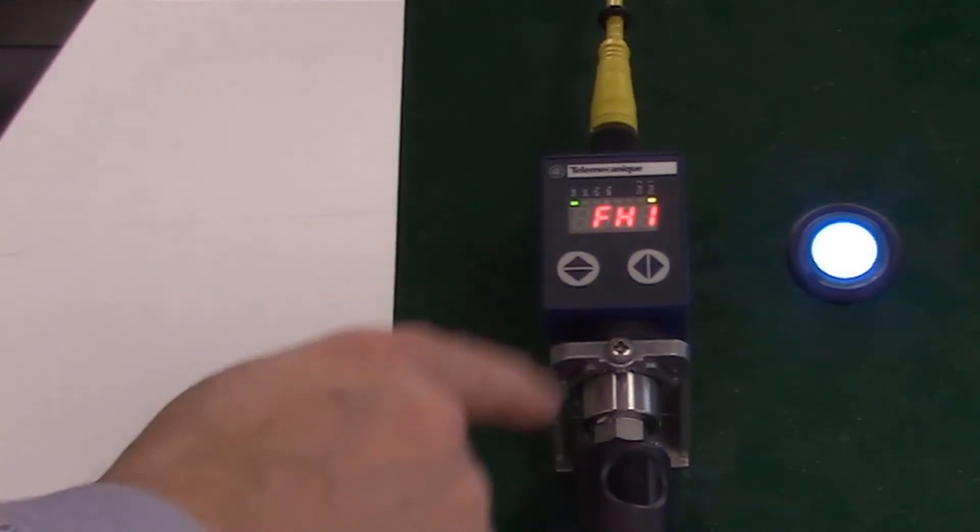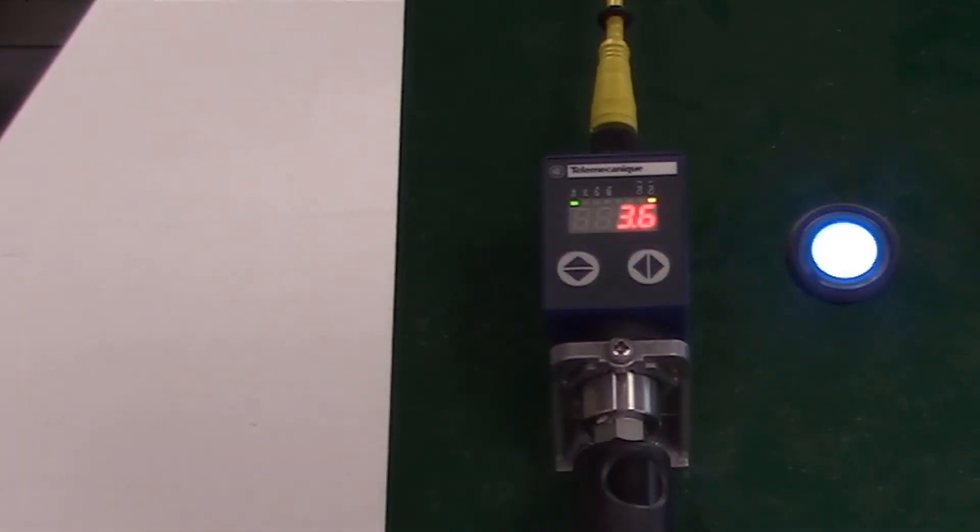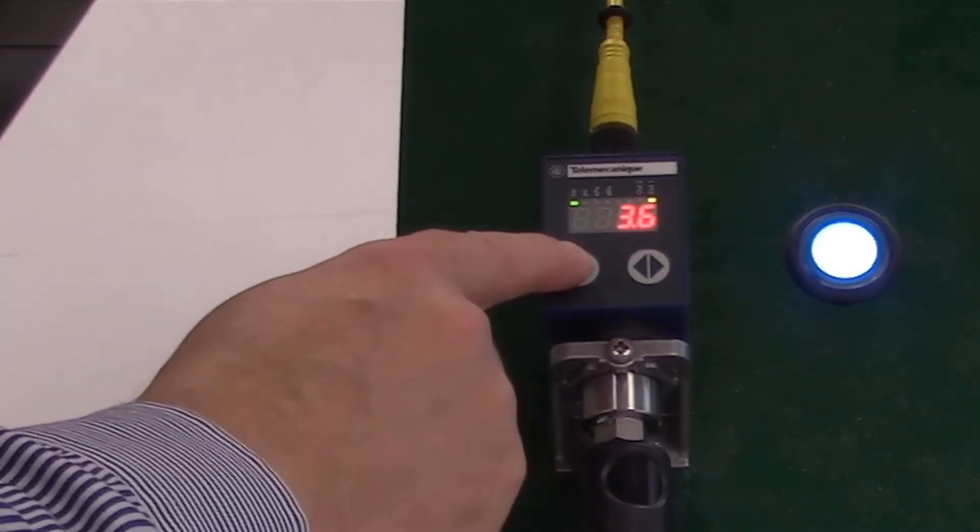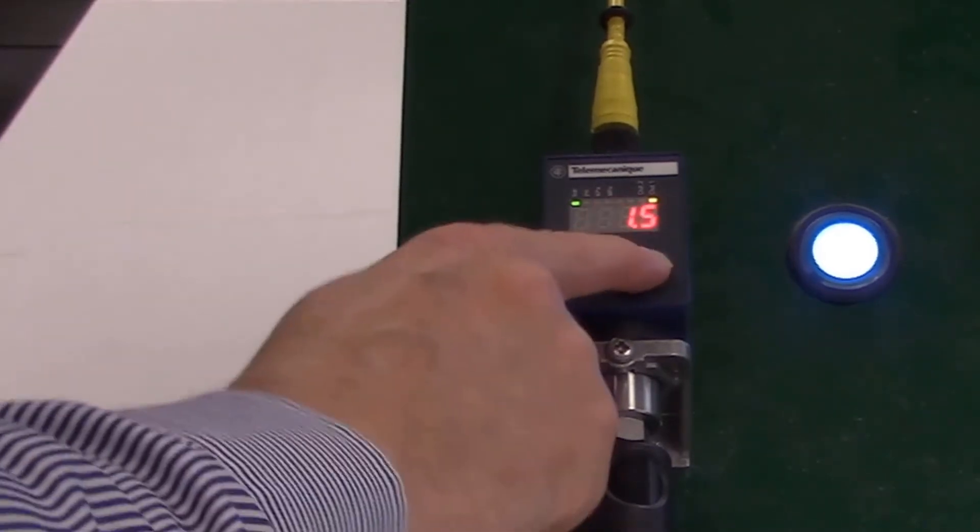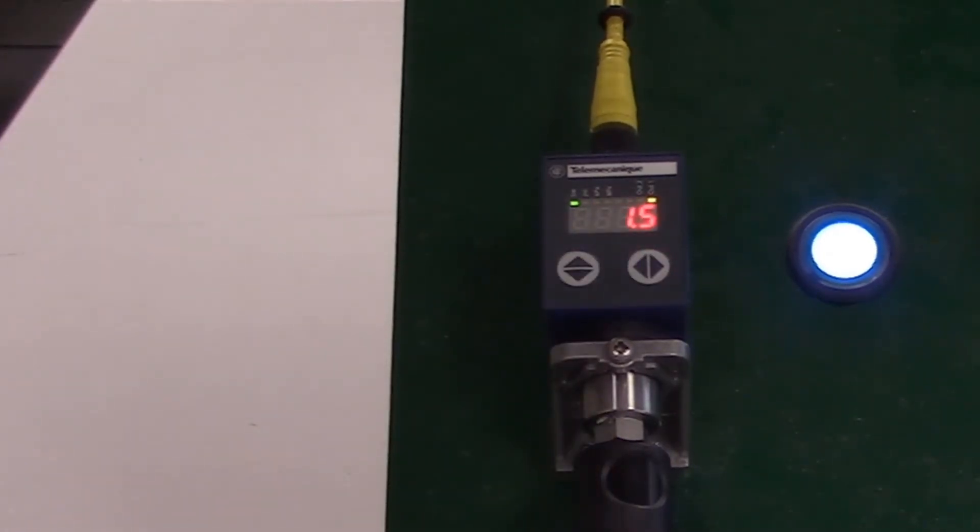The FH1 is set to 3.6 bar, often called the high point. And FL1 is set to 1.5 bar, often called the low point.